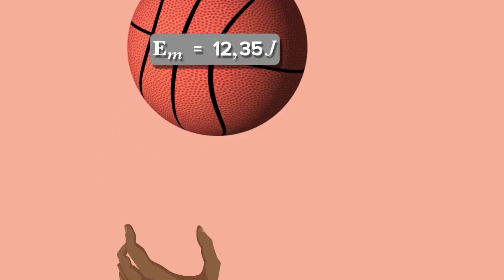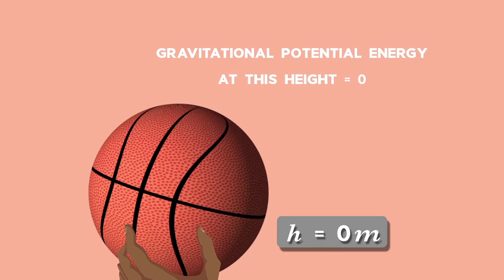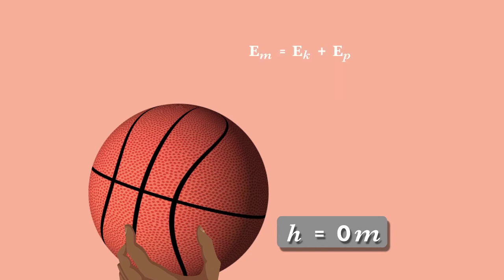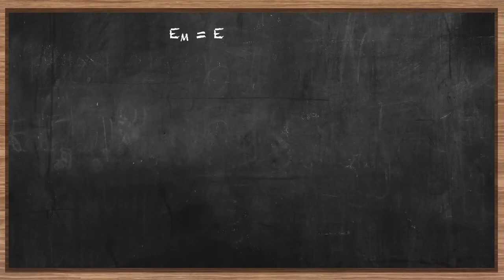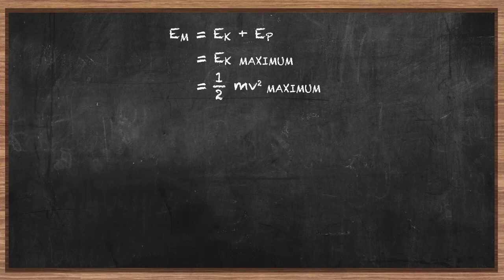The mechanical energy of the ball is 12.35 joules. Before the ball leaves the player's hand, its height is zero meters above his hand, so its gravitational potential energy at this point is zero. All the energy it possesses is kinetic energy — it's leaving his hand with a maximum value of speed. Since EP = 0, EM = ½mv²_max.